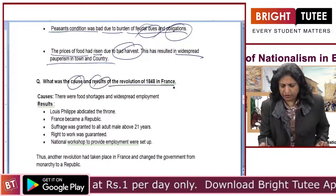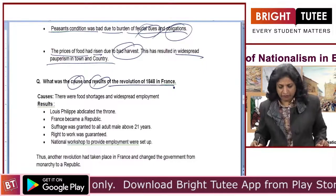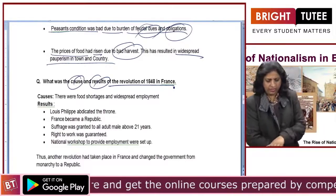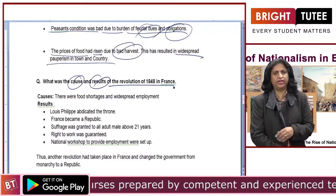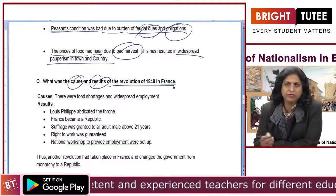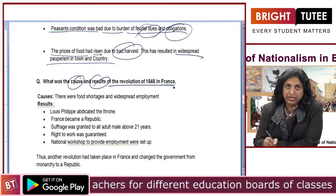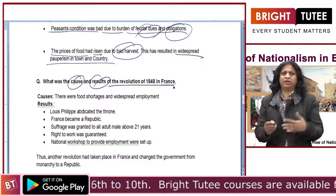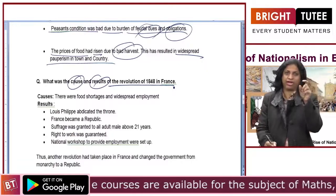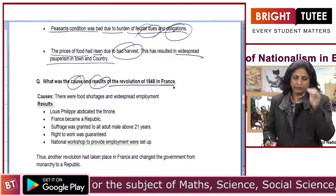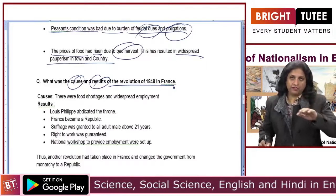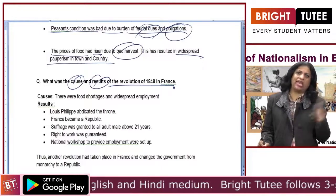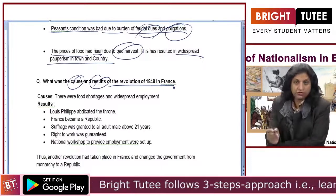What was the cause and result of the revolution of 1848 in France? In 1815, there was the establishment of the Bourbon dynasty, then in 1830 the establishment of constitutional monarchy with Louis Philippe installed on the throne. Now again in 1848 there was another change.